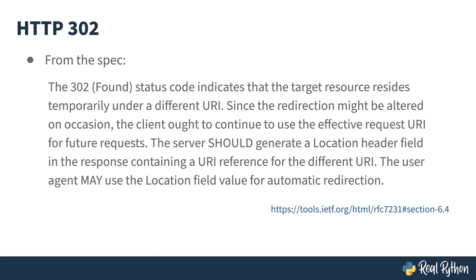Here's the actual spec. The 302 found status code indicates that the target resource resides temporarily under a different URI. Since the redirection might be altered on occasion, the client ought to continue to use the effective request URI for future requests. The server should generate a location header field in the response containing a URI reference for the different URI. The user agent may use the location field value for automatic redirection. Why is it that specifications always sound like the legalese at the end of a drug commercial? What this essentially says is the 302 will include a location header field containing the value of the new URL, and it's up to the implementation of the browser to decide whether or not to automatically redirect. It also states that in subsequent visits to this original URL, the browser should still hit the original URL, as it may no longer be redirected or it may be redirected somewhere else.